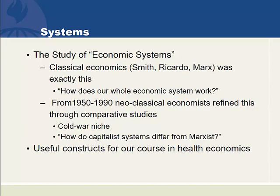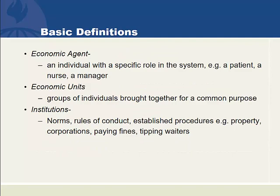We're going to start with the basic elements in a health system, and we only need to know about three different basic elements. Systems have economic agents. An agent is an individual with a specific role in the system. A patient is an economic agent. A nurse is an economic agent. The manager of a hospital is an economic agent. They have a specific role in the system.